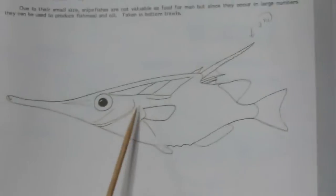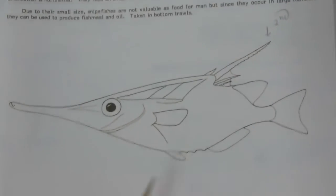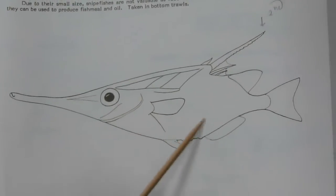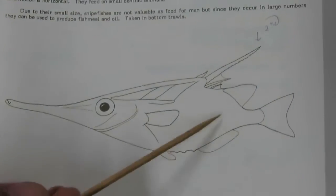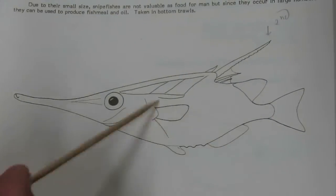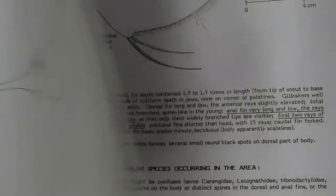Next is Macrorhamphosidae. The lateral line is present or absent. In this figure you cannot find any kind of lateral line.